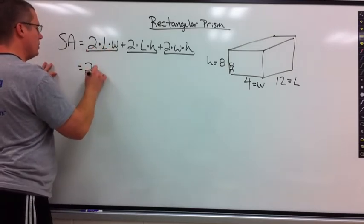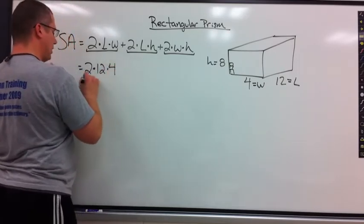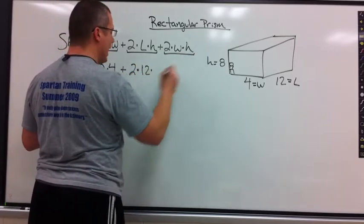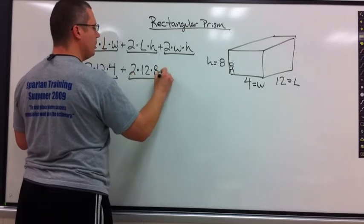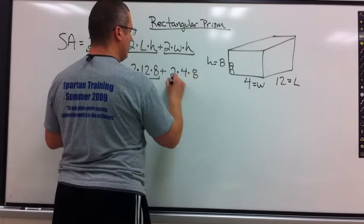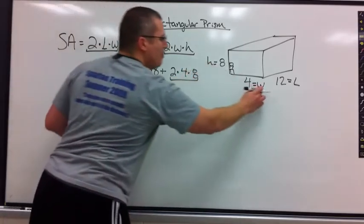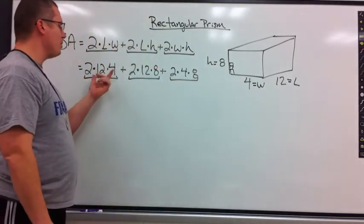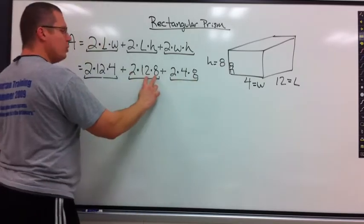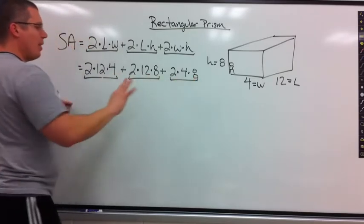2 times L times W: 2 times 12 times 4. That's that chunk. Plus 2 times 12 times 8, which is height. That's my second chunk. Plus 2 times 4 times 8. Real quick, you should be able to check. There are three numbers. How this works is you'll take two of the numbers and pair them up one time. 12 and 4 match up. Check. Any other 12 4's? No. 2, 12, 8. Any other 12 8's? No. 4, 8. Any other 4 8's? No. That means I did it right.